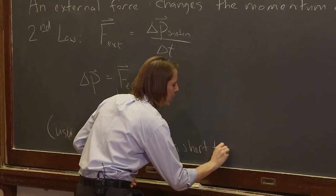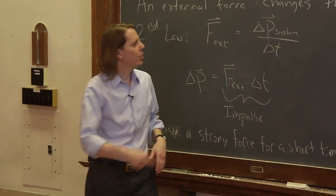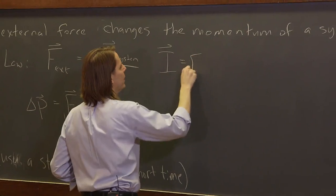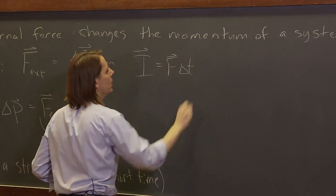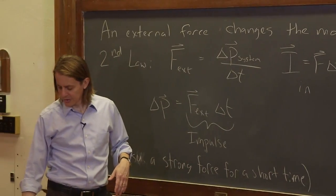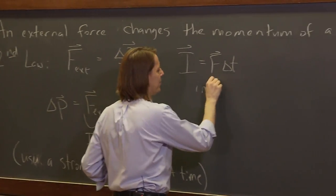It doesn't have to be, but that's often how it works out. So this actually is its own quantity, I, big I, and it's equal to F delta t, and it's in Newton times seconds, which, well of course it's in delta P, so it's in kilogram meters per second.